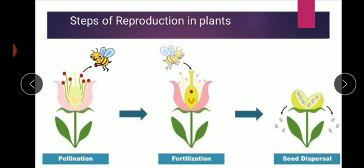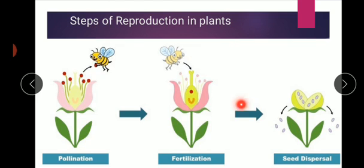Steps of reproduction in plants: first of all, the first step is pollination — how pollen grains are being transferred from one flower to another flower by the action of insects, by wind, by air. Then how fertilization occurs, meaning the union of male and female gametes, the zygote formation, and then seed dispersal. These are the three steps of reproduction in plants.